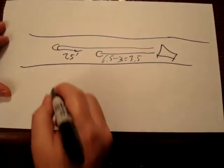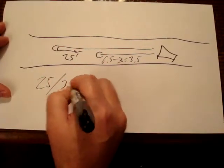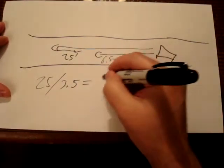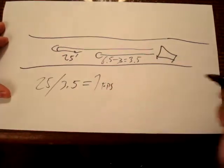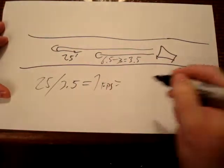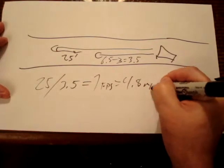Now if you do a little math, you go 25 divided by 3.5. That equals 7 feet per second. 7 feet per second equals 4.8 miles per hour.